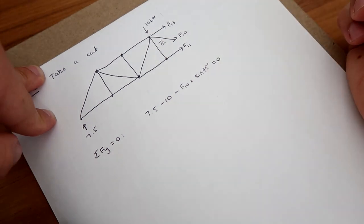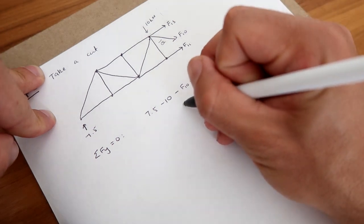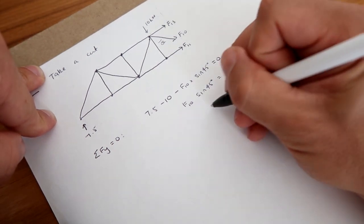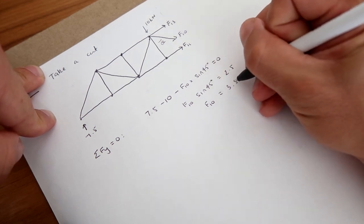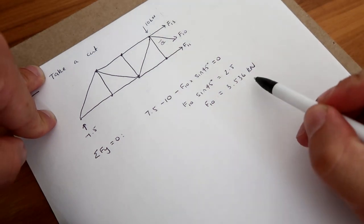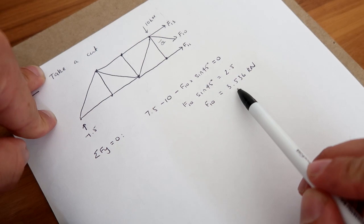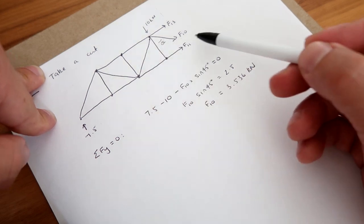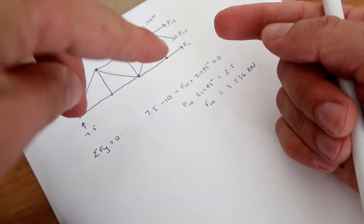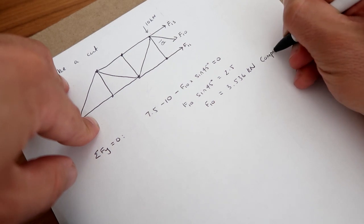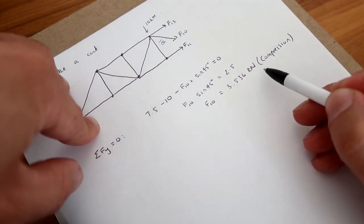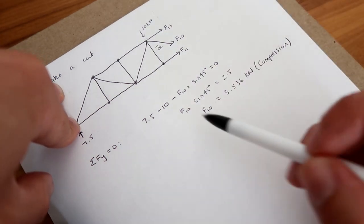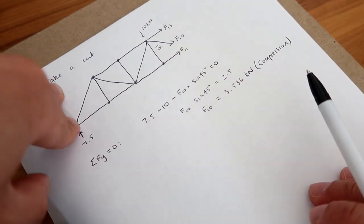Summing those to zero and solving: F10 × sin 45° = 2.5, therefore F10 = 3.536 kN. Importantly, this is a positive value, meaning the force acts in the direction I originally assumed — pushing into the member. So that member is in compression. It's important to clearly denote the direction and state compression to make it clear to whoever is marking your work.